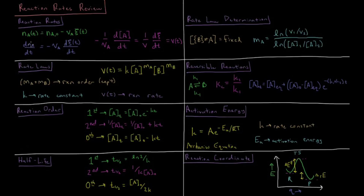If you want to go from number of moles to concentration, you just divide by volume. Dividing both sides by volume, you get minus 1 over the stoichiometric coefficient of A times the change in its molarity with respect to time, equal to 1 over volume times the time derivative of the extent of reaction. This quantity, and any analogous quantity for other chemical species in the reaction, is equal to the reaction rate, called V(t), or the reaction velocity.